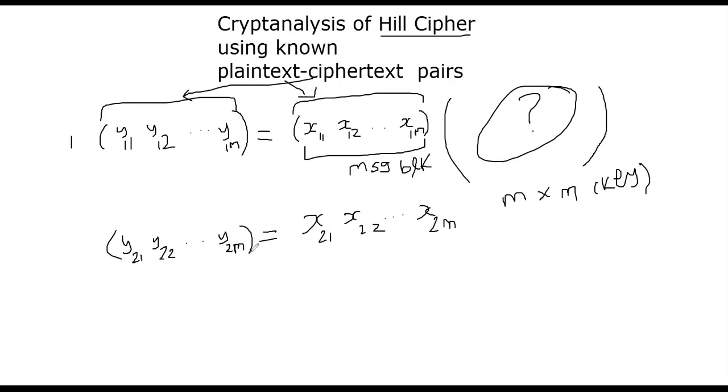So if you try this, let's assume you happen to know m plaintext ciphertext pairs. So what you are having now is basically a system of m by m equations. You don't know all the m squared entries that are part of the key matrix. That's what you wanted to recover. All you can do is, you can rewrite this whole thing as follows.